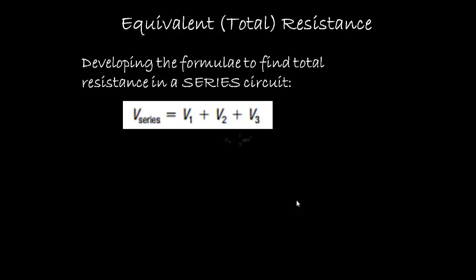So in our case here we're basically saying the voltage of the source is going to equal the voltage across resistor 1 plus the voltage across resistor 2 plus the voltage across resistor 3.